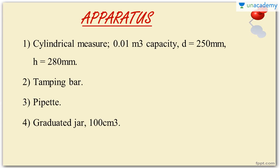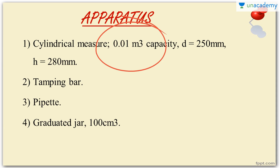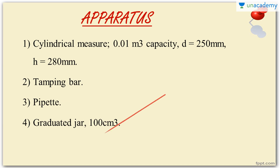Now let's see what apparatus is required for the experiment. The first and most important apparatus is a cylindrical measure with a capacity of 0.01 meter cube, an internal diameter of 250 mm, and an internal height of 280 mm. Second, we need a tamping rod, which is used to provide the necessary compaction. Next is the pipette — a slender tube with a bulb in the middle used to pipette out liquid. And last, we need a graduated jar of 100 centimeter cube capacity.